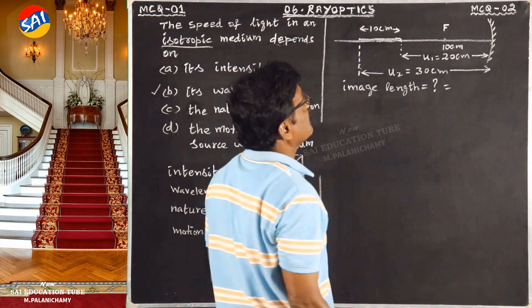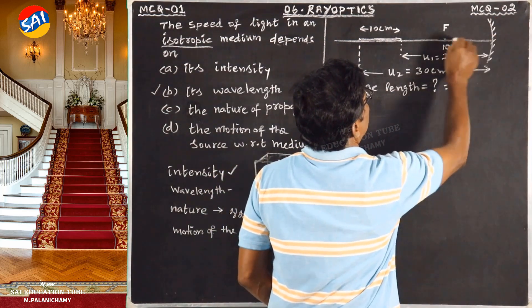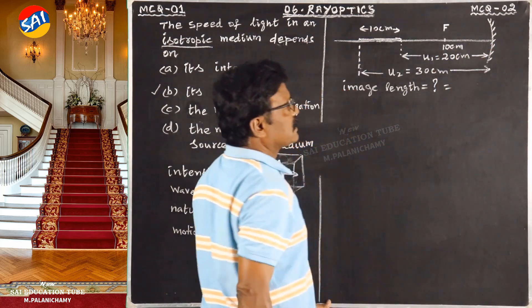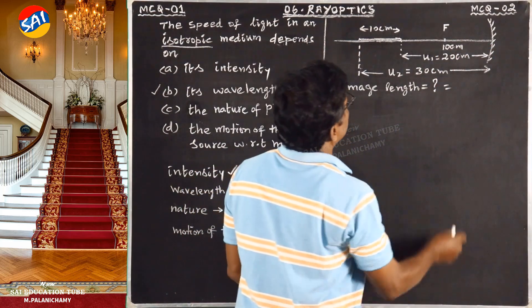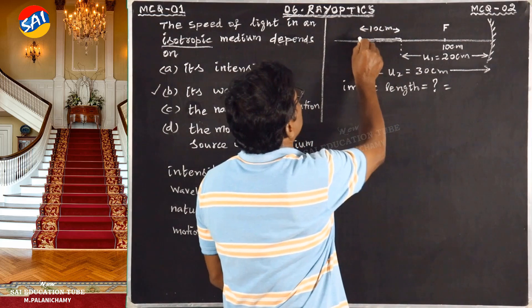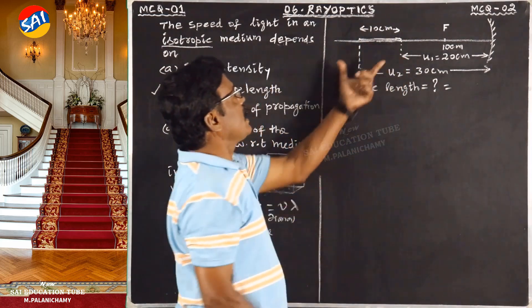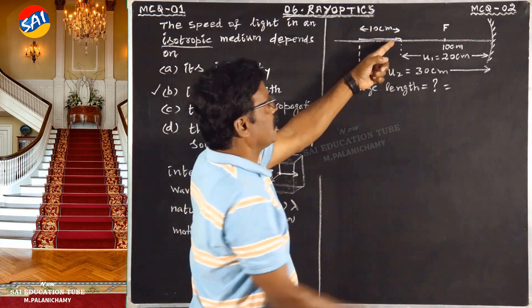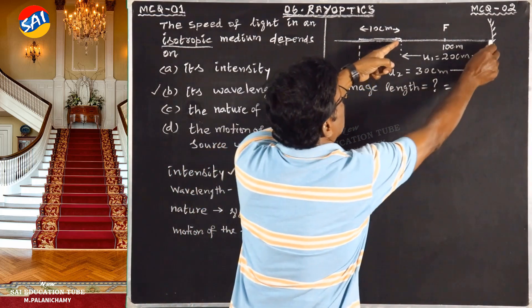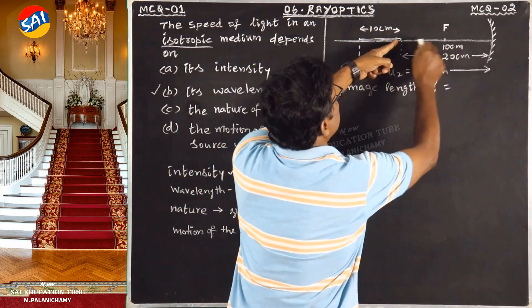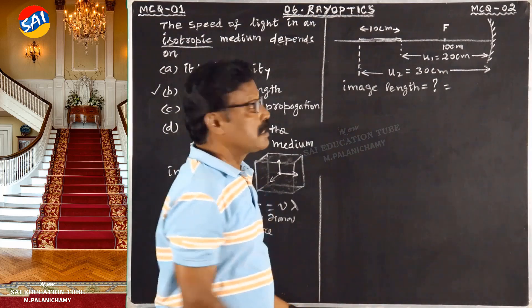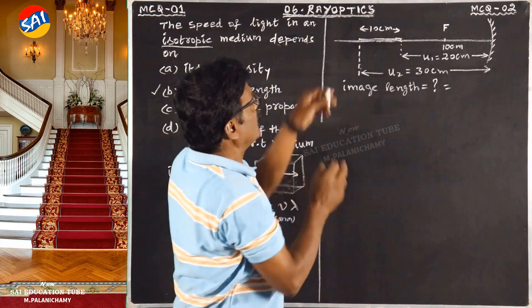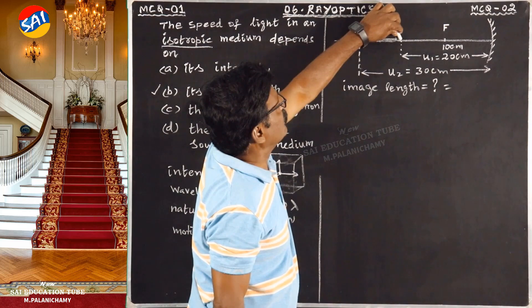Concave mirror — this is the focal length of 10 centimeters. There is a rod of 10 centimeters. This pole end of the rod is 20 centimeters from the mirror.